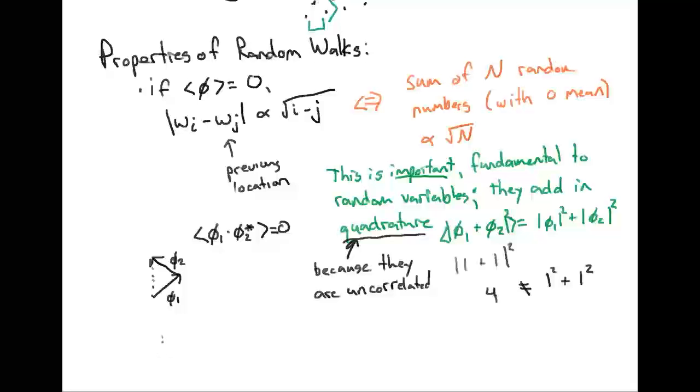Another way of seeing that is just to create the square of this number: phi one plus phi two squared, which equals phi one squared plus two phi one phi two plus phi two squared. This is precisely where random variables are different. For normal variables this cross term is not equal to zero, but for random uncorrelated numbers this cross term averages out to zero precisely because that's what uncorrelated means, which is why random variables add in quadrature.